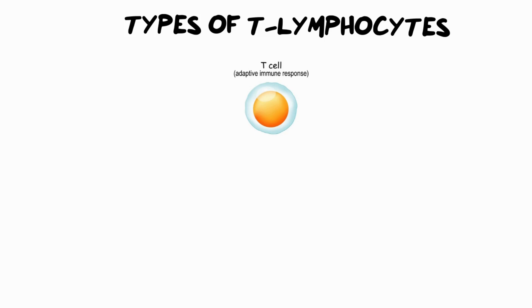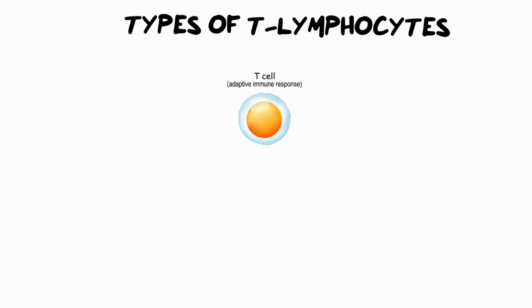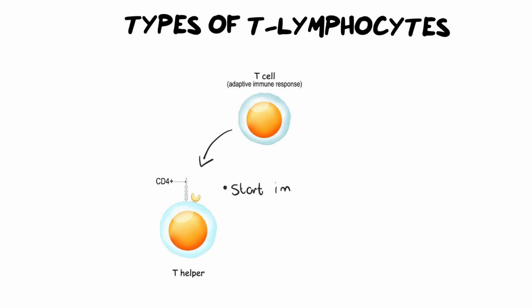So let's dive into the various types of T lymphocytes. T lymphocytes are adaptive immune response cells, which essentially means that they have specific things they're going to respond to. There are two main kinds we need to know. The first is what we call a helper T cell. A helper T cell is going to start the immune response, and without this cell you wouldn't be able to tell all the other immune cells and body cells that you're under attack and that we need to respond.